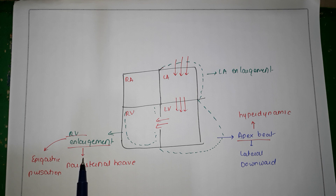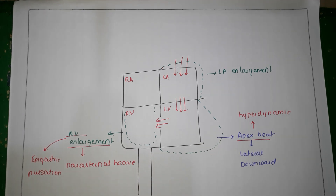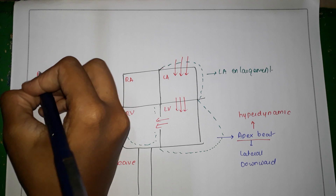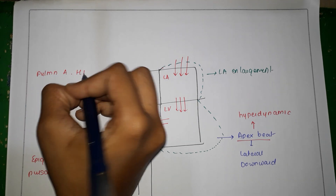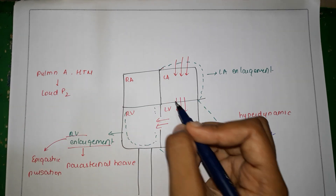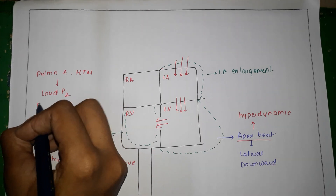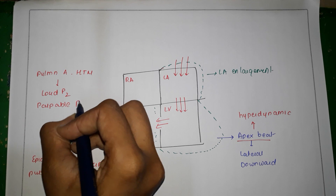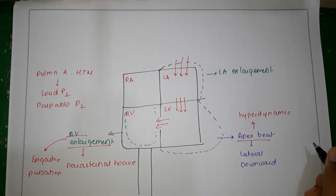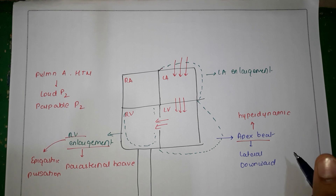It is important to note that these findings — parasternal heave and epigastric pulsation — occur very late, only after the development of pulmonary artery hypertension. Whenever there is pulmonary artery hypertension, you will notice a loud P2 on auscultation, especially in the pulmonary area, and also a palpable P2 on palpation in the pulmonary area.